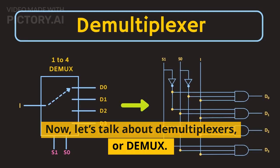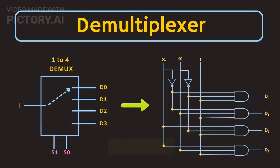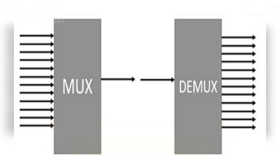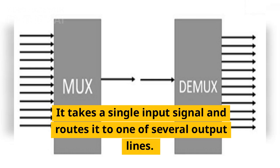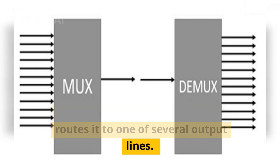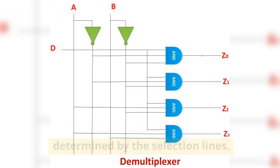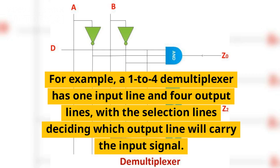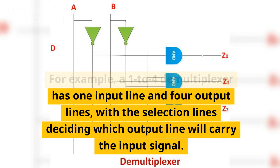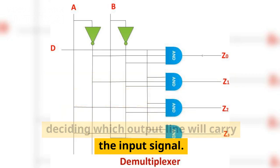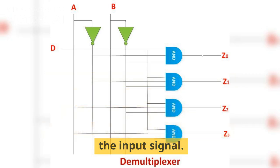Now let's talk about demultiplexers, or DEMUX. A demultiplexer does the reverse of what a multiplexer does — it takes a single input signal and routes it to one of several output lines. The specific output line is determined by the selection lines. For example, a 1-to-4 demultiplexer has one input line and four output lines, with the selection lines deciding which output line will carry the input signal.